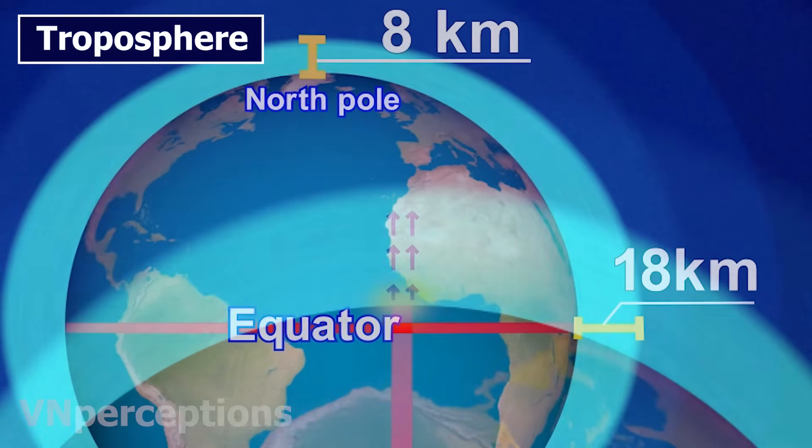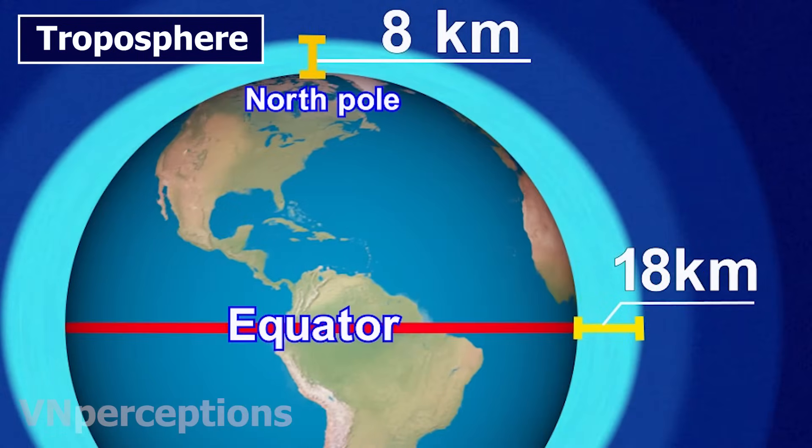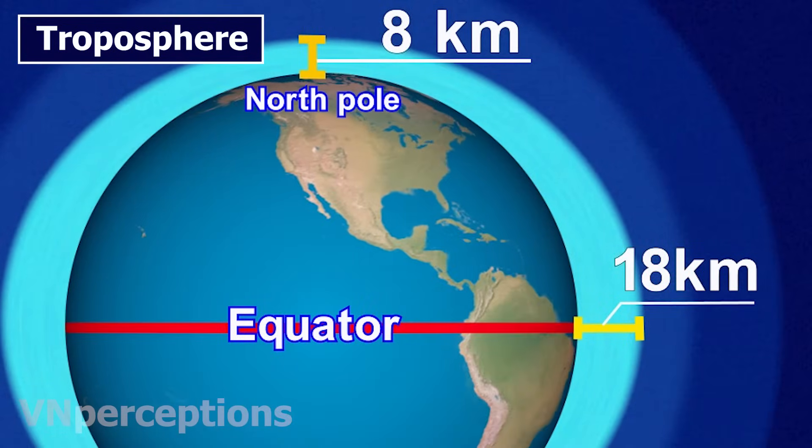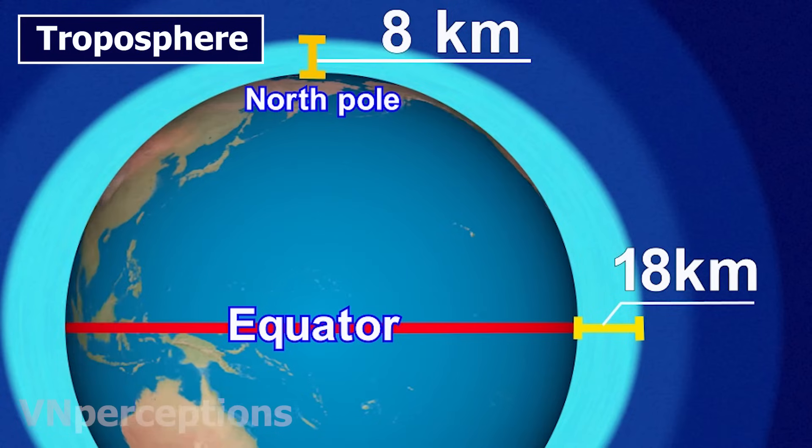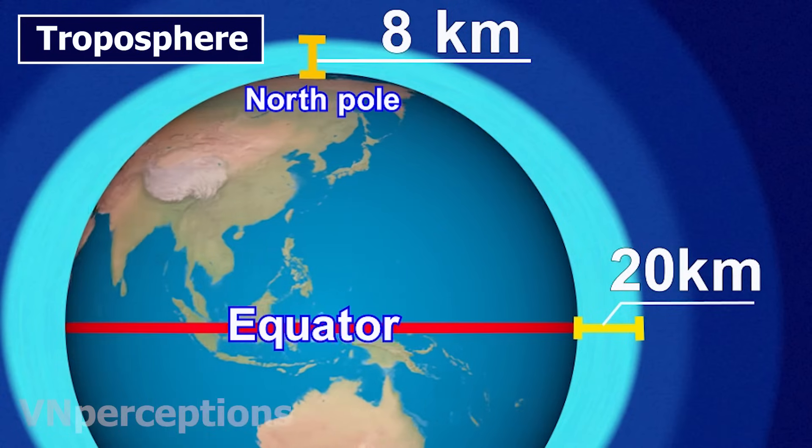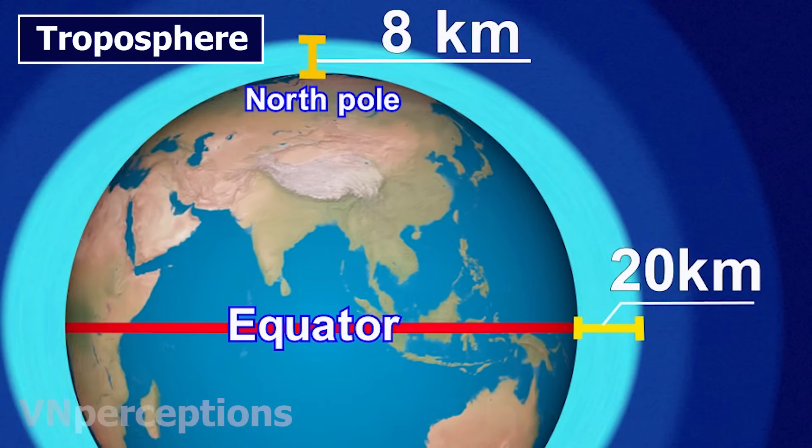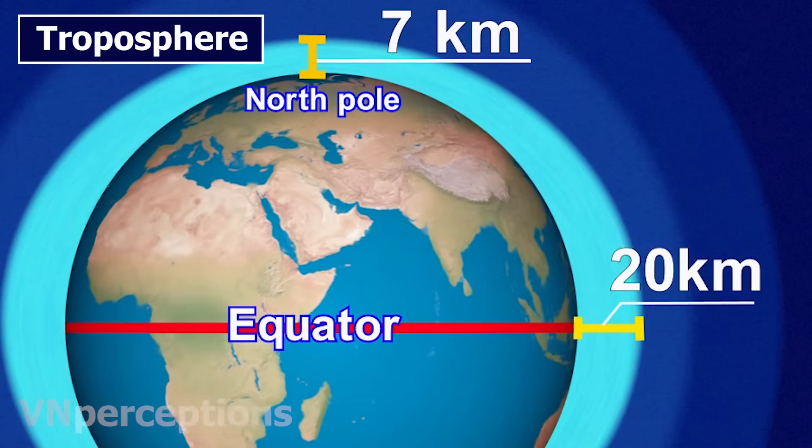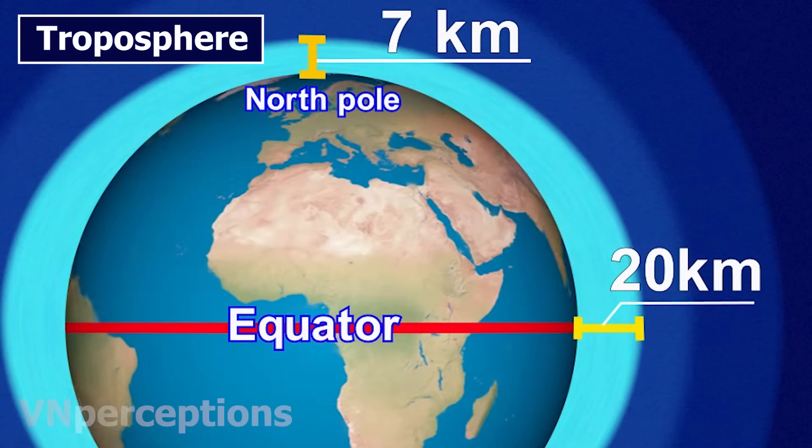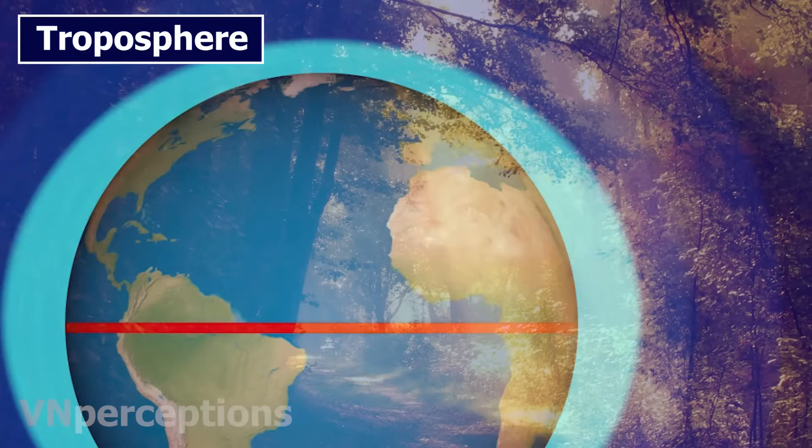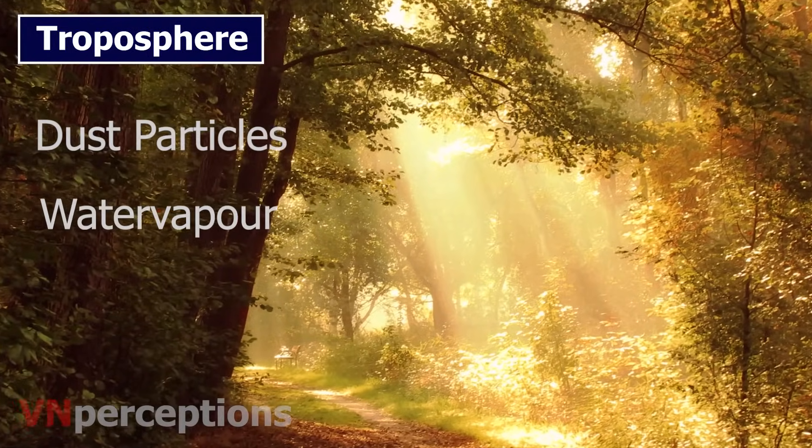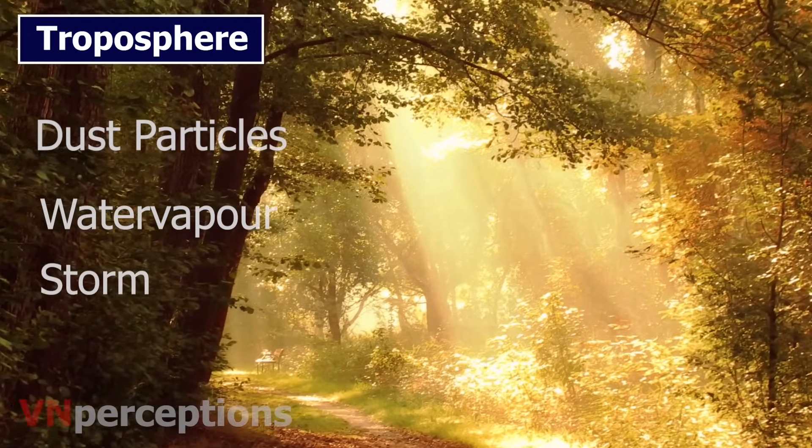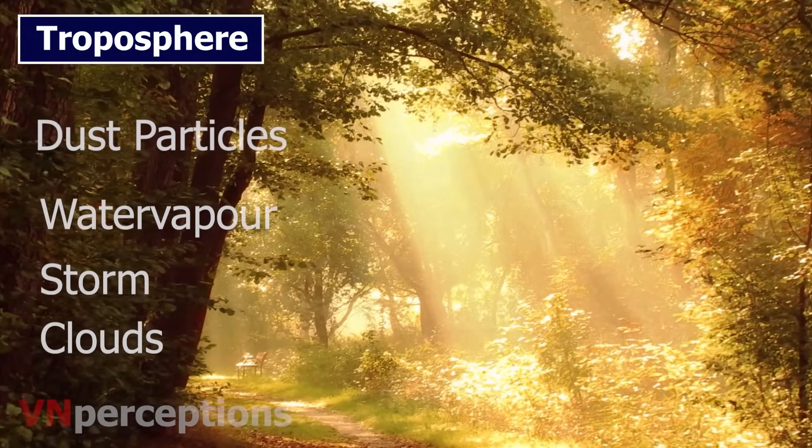The height also varies by season. It is lower in winter and higher in summer. It can be as high as 20 kilometers near the equator and as low as 7 kilometers over the pole in winters. This layer contains dust particles, water vapor, storm, clouds and rain.